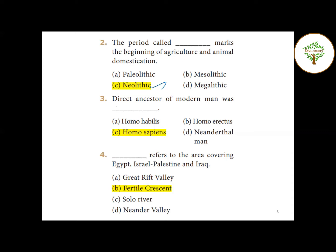Third question: The direct ancestor of Modern Man. The answer is Homo Sapiens - Option C.